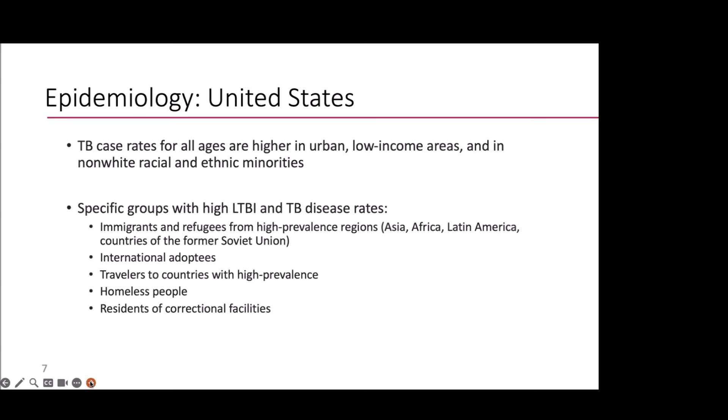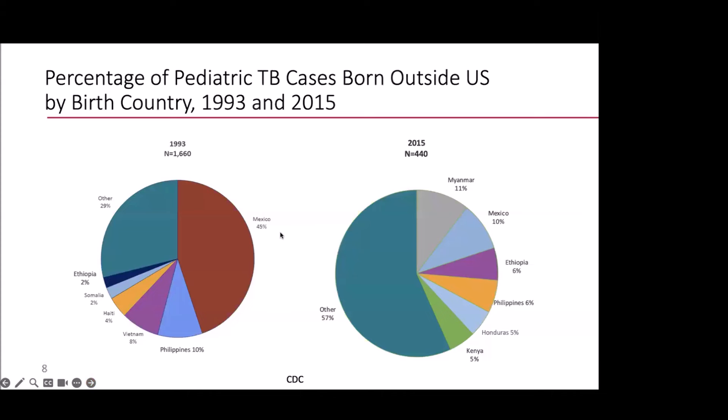Specific groups with really high rates of LTBI and TB disease include immigrants and refugees from high-prevalence regions. Another key group to think about in children is international adoptees, travelers to countries with high prevalence, people who are homeless or exposed to homeless people, and residents of correctional facilities and their families. This is still relevant to children, although they're often not in correctional facilities — they sometimes visit or are living with a parent who is recently incarcerated.